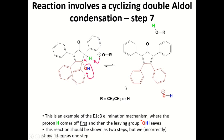This is again an example of an elimination E1CB mechanism where the proton comes first and then the leaving group always leaves. And again, this reaction should be shown as two steps instead of one that we show over here.